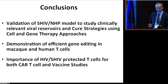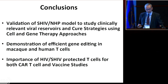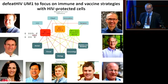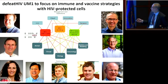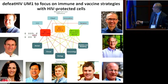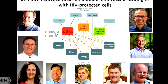In conclusion, we've validated our SHIV-NHP model to study clinically relevant bioreservoirs and cure strategies using cell and gene therapy approaches. We've demonstrated efficient gene editing in macaque and human T cells and the importance of HIV/SHIV-protected T cells for both CAR T cell and vaccine studies. Our collaborators include Jim Mullins, Deb Fuller, Michael Farzan, Thor Wagner, David Rawlings, Larry Corey, and the broader collaborative infrastructure. Thank you.